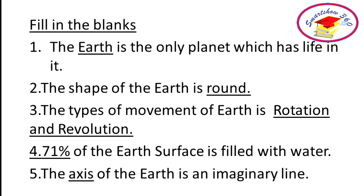Question 2. The shape of the Earth is dash. Simple — the answer is round. Question 3. The types of movements of Earth are dash and dash. The answer is rotation and revolution.